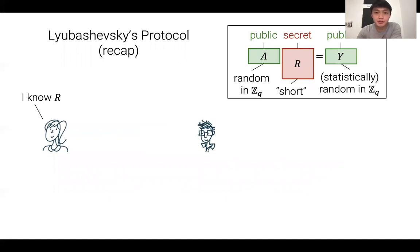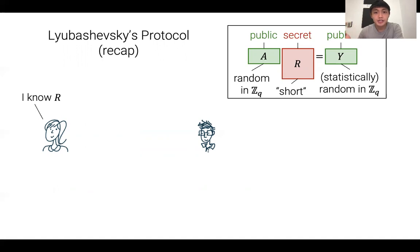Let me start by recapping Lubaczewski's three-message protocol — essentially a lattice analog of the Schnorr protocol. We have three parameters A, R, and Y. A is a random wide matrix over Z_q. Y is statistically close to random and is computed by sampling a short square matrix R, right-multiplying it by A to compute Y — by the leftover hash lemma, Y is statistically random. The prover posts public parameters A and Y, and to identify itself, it proves that it knows R, since it's the only person who generated Y.